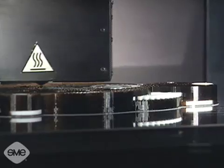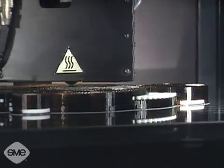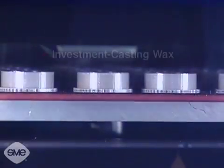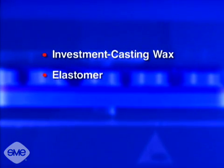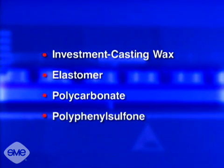ABS provides tensile strengths of up to 5,400 pounds per square inch. Other materials used include investment casting wax, elastomer, polycarbonate, and polyphenyl sulfone.